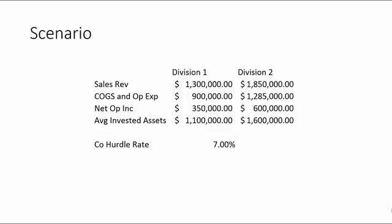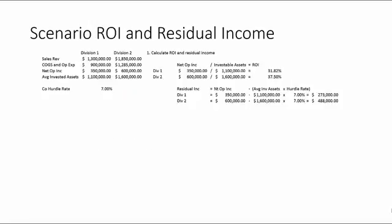Let's take a look at a scenario. We have a couple of different divisions with sales revenue, COGS, operating expenses, net operating income, investable assets, and the hurdle rate. To calculate ROI we take net operating income divided by investable assets. For Division 1 that's $350,000 divided by $1.1 million, giving us an ROI of 31.82 percent.